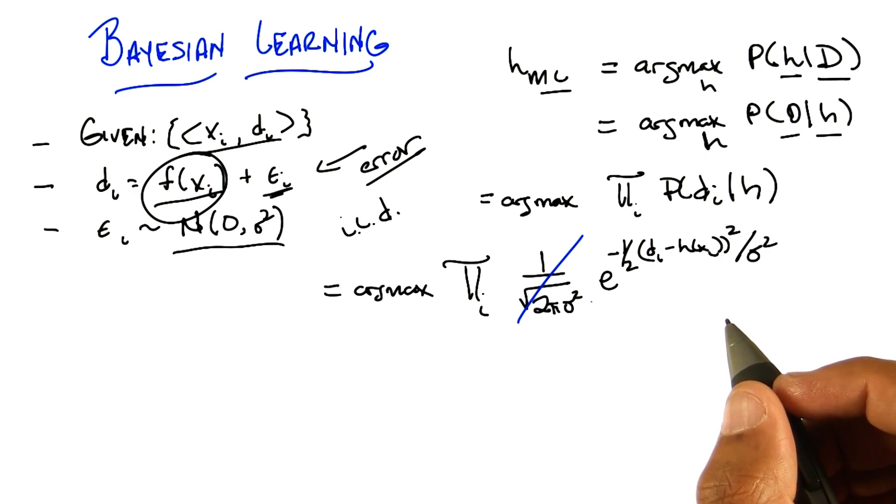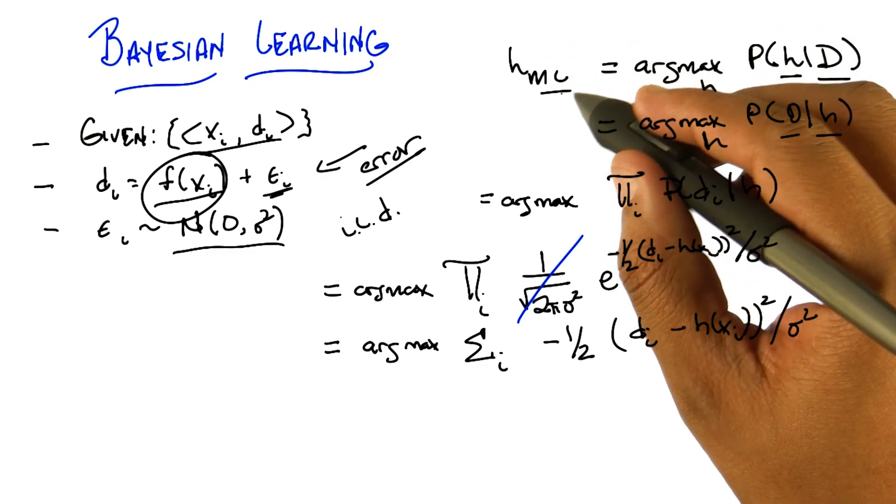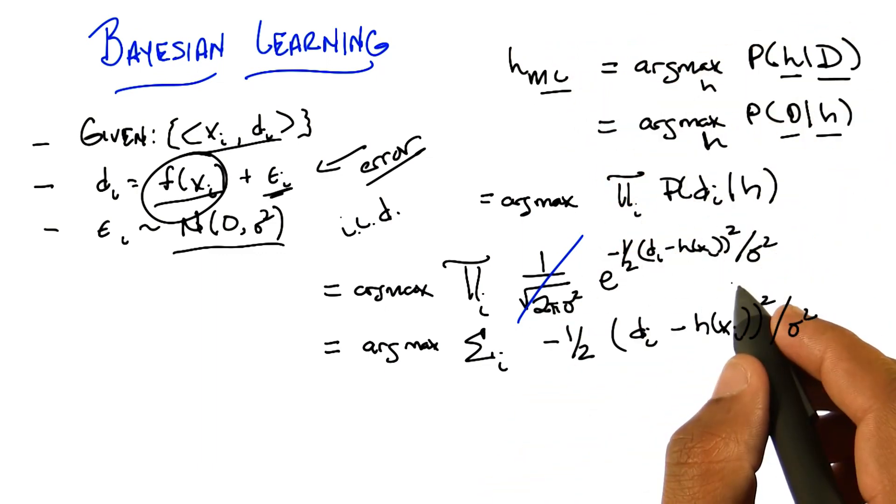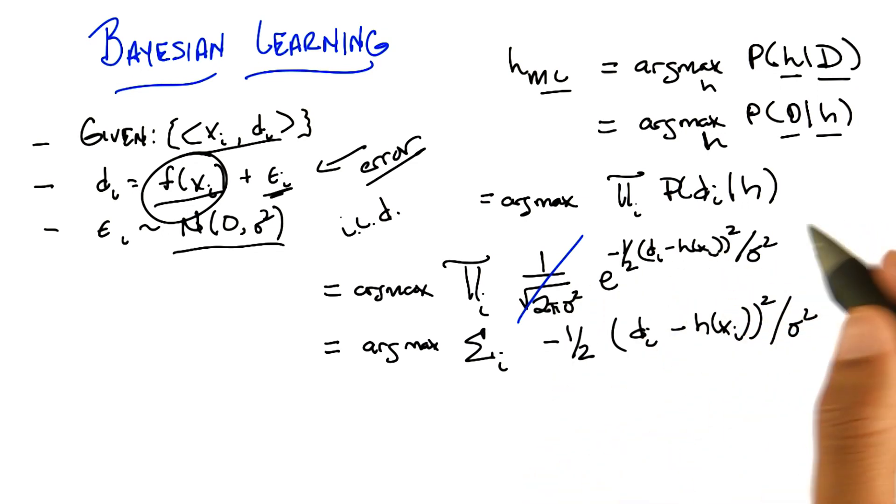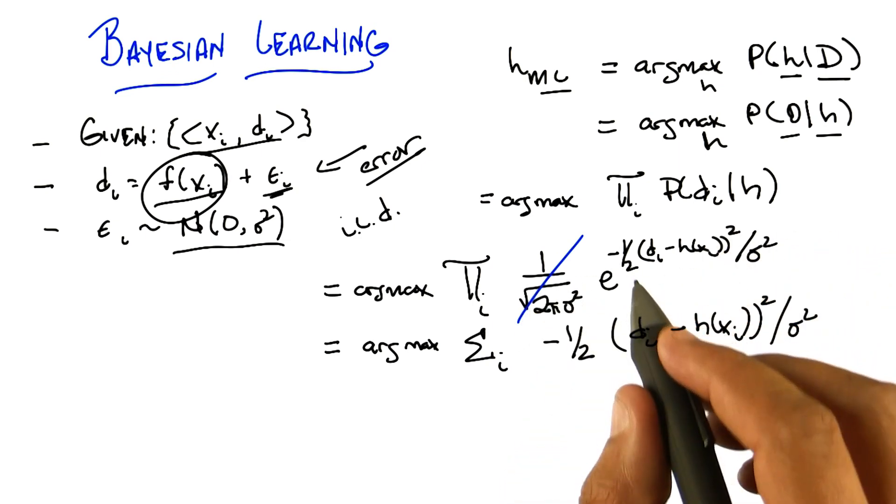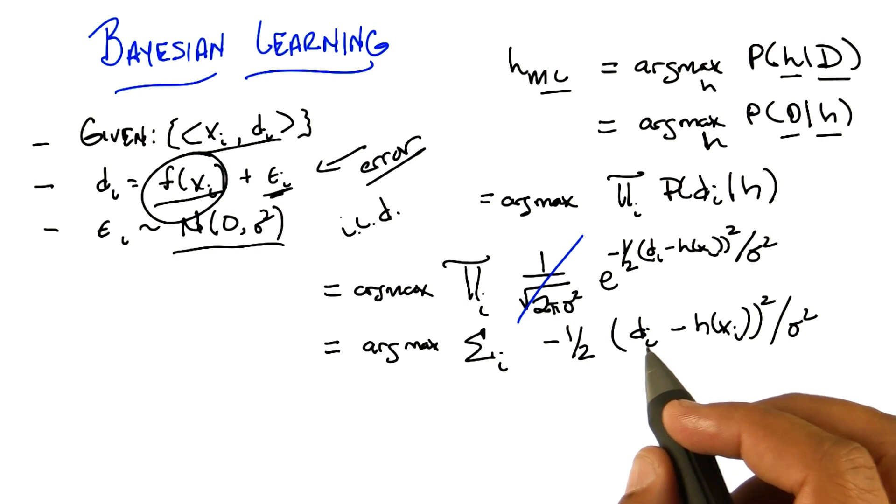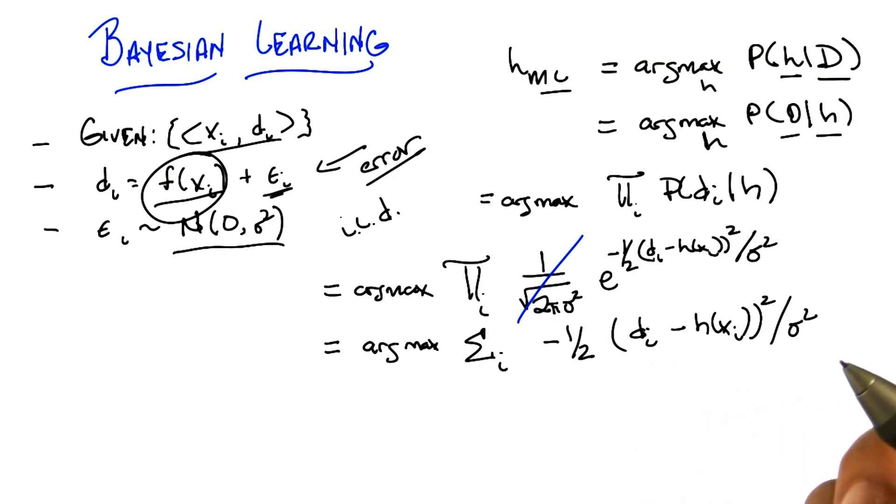That's just the definition of a Gaussian. The probability of us seeing the data is the product of the probability of us seeing each of the data items, which is just the product of this expression here. Now we need to simplify this. We could stop here because this is true, but we really need to simplify. What kind of trick do you think we would do here? First thing I would do is notice that the one over square root two pi sigma squared doesn't depend on i at all. Since we're doing an arg max anyway, it's not going to have any impact at all, so I would just cross that out.